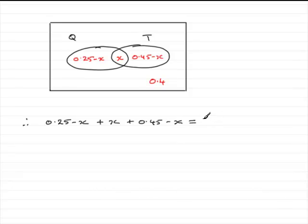It's got to equal 60% or 0.6. If we simplify this on the left, we end up with 0.7 minus X equals 0.6. And if we rearrange this for X, we find that X equals 0.7 minus 0.6, which is 0.1.